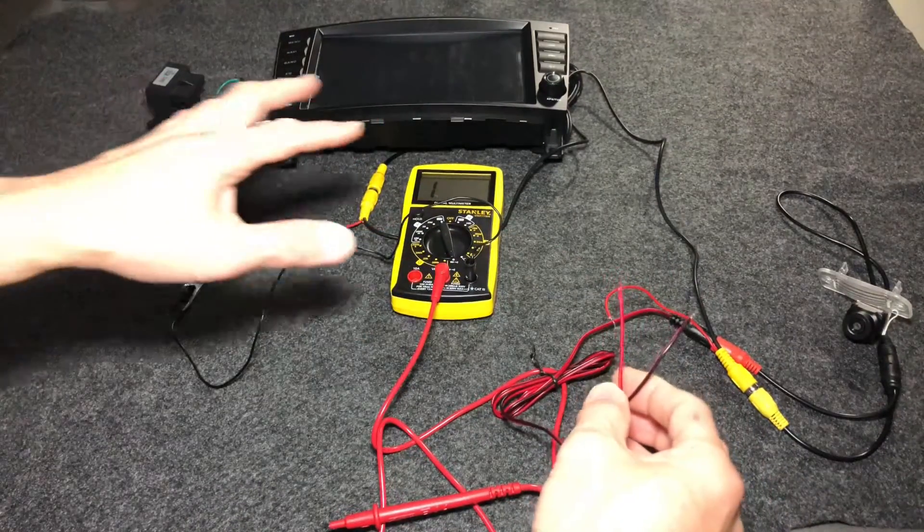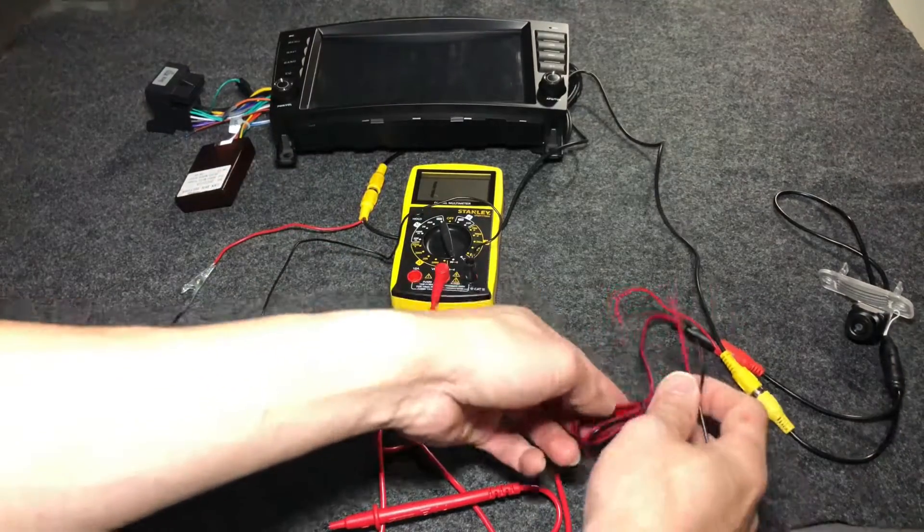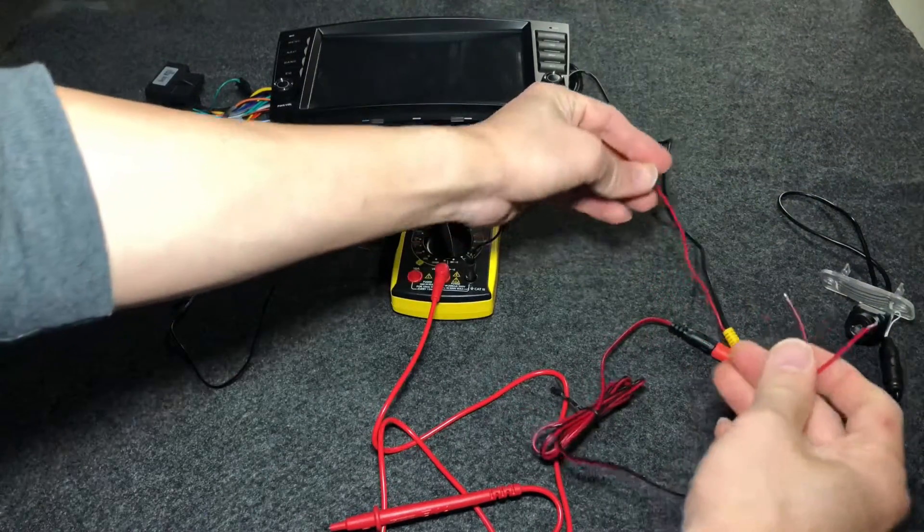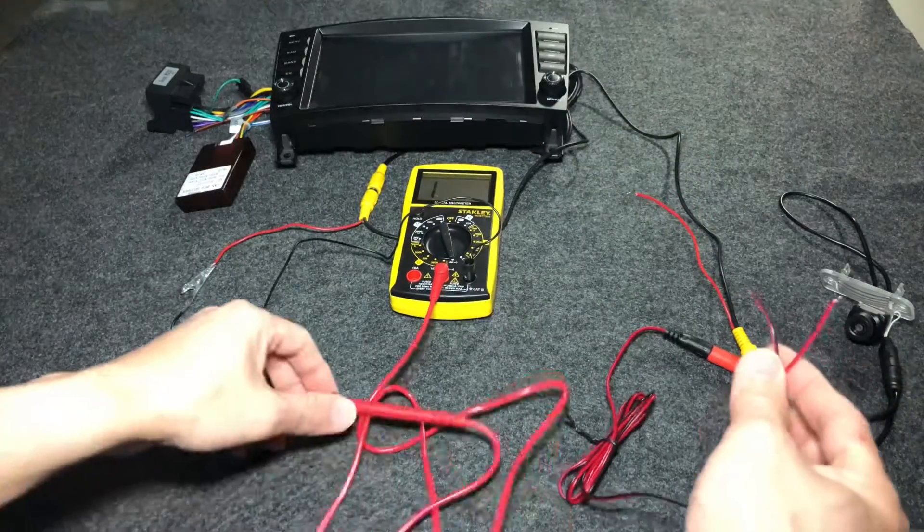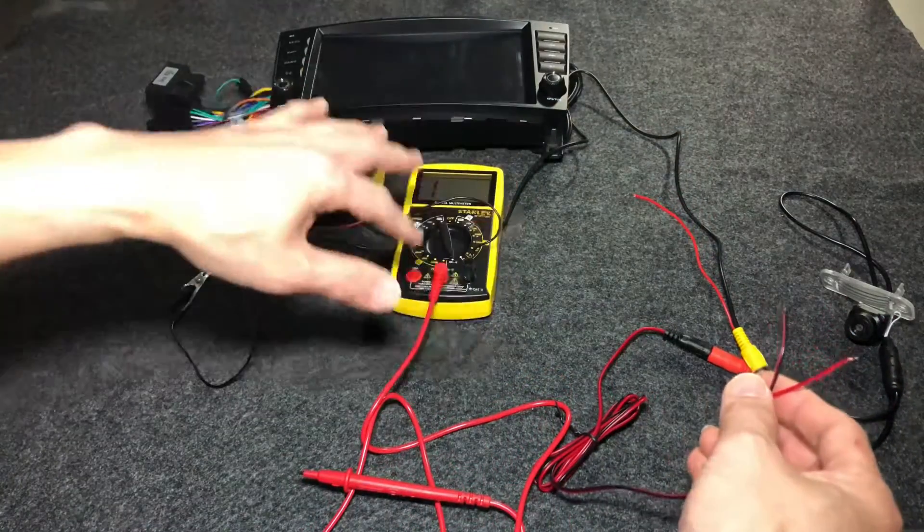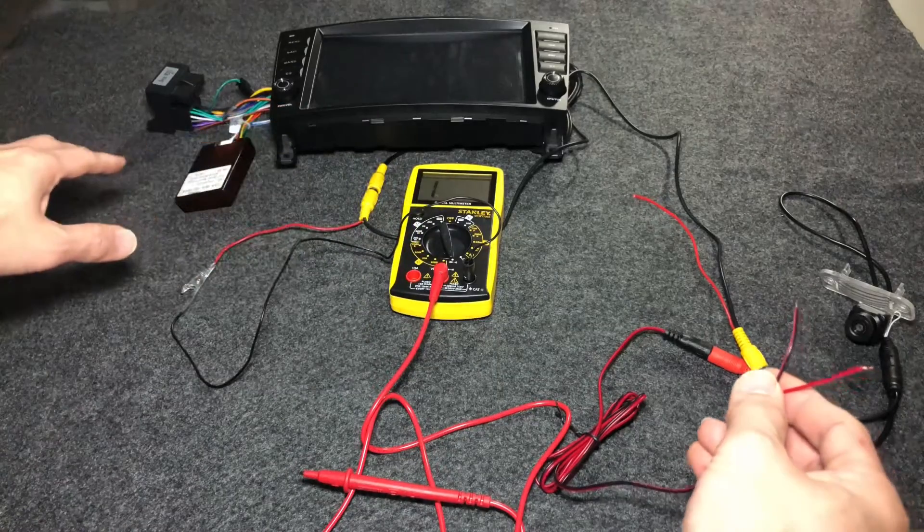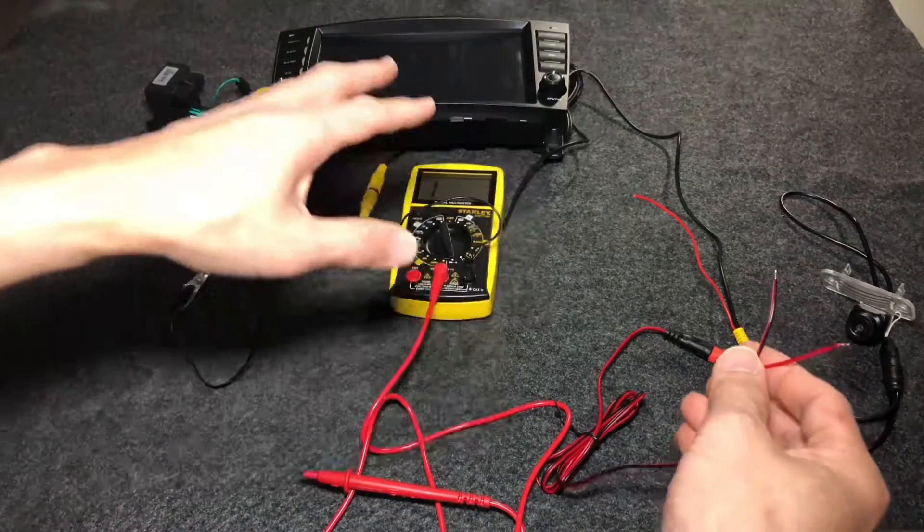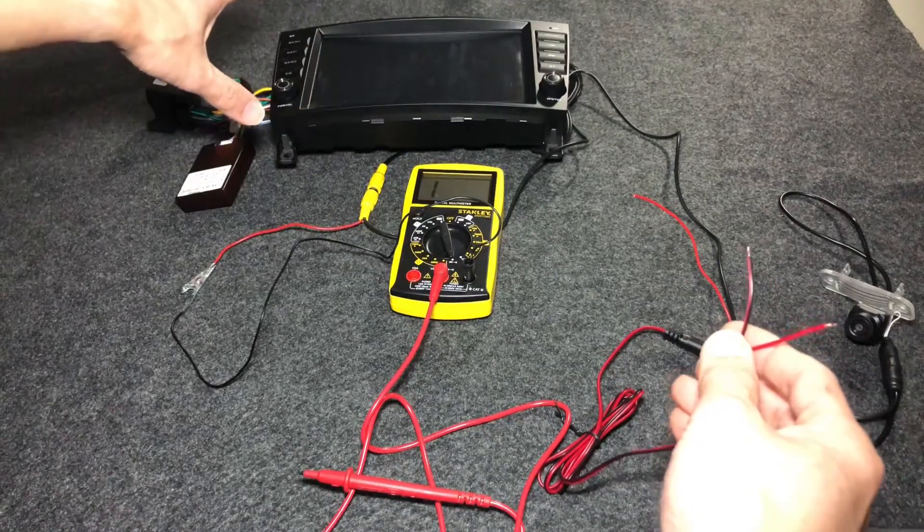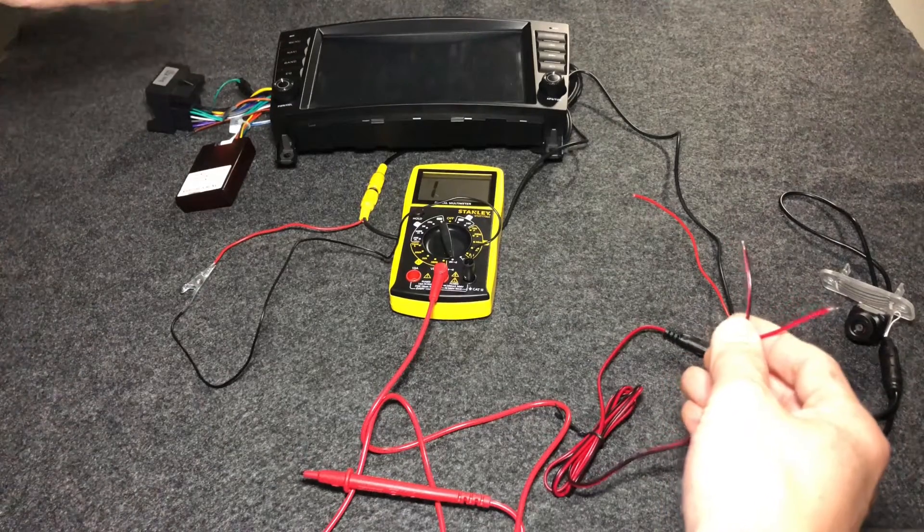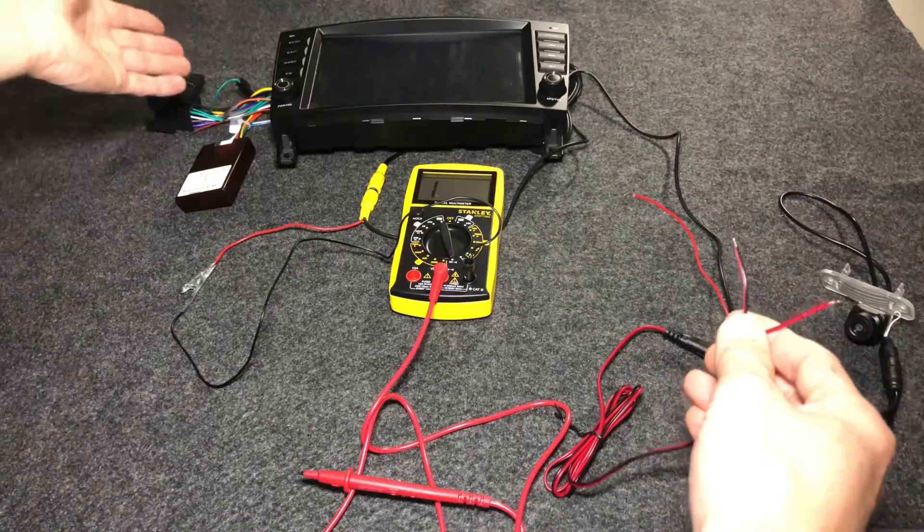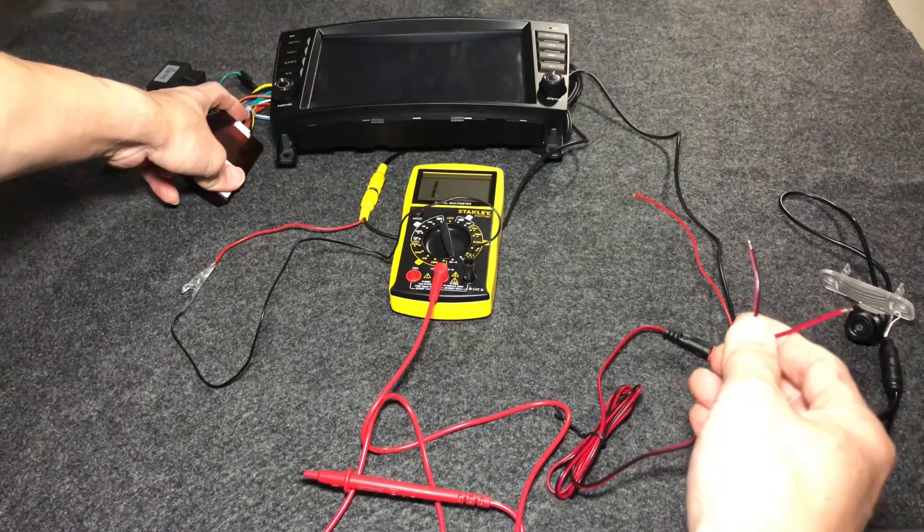Typically it will come with these same set of components. The only difference that you may have is the type of head unit. They might have a separate wire for the reverse trigger. In my case, I don't have to tap into the brown wire on the CAN bus decoder.